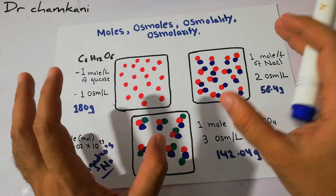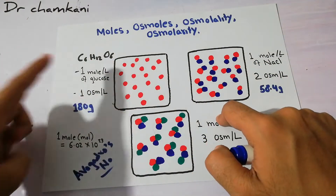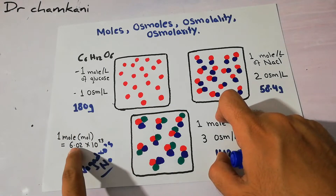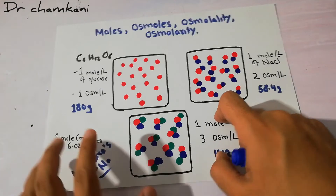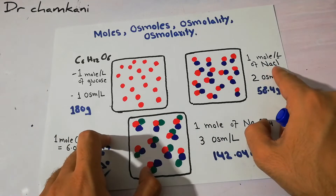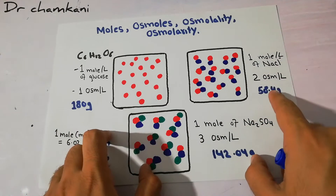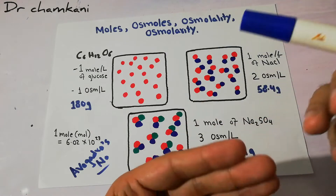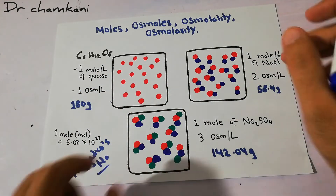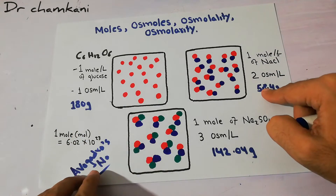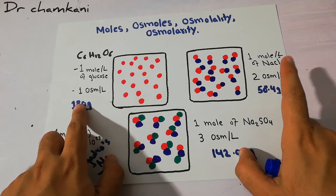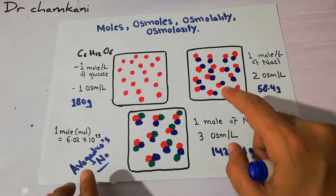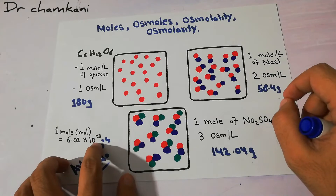One mole of any substance will be different. For example, one mole of glucose will contain 180 grams, and these 180 grams will contain Avogadro's number of particles — 6.02 × 10²³. Similarly, one mole of sodium chloride (NaCl) will contain 58.4 grams. But both contain the same number of particles, 6.02 × 10²³.